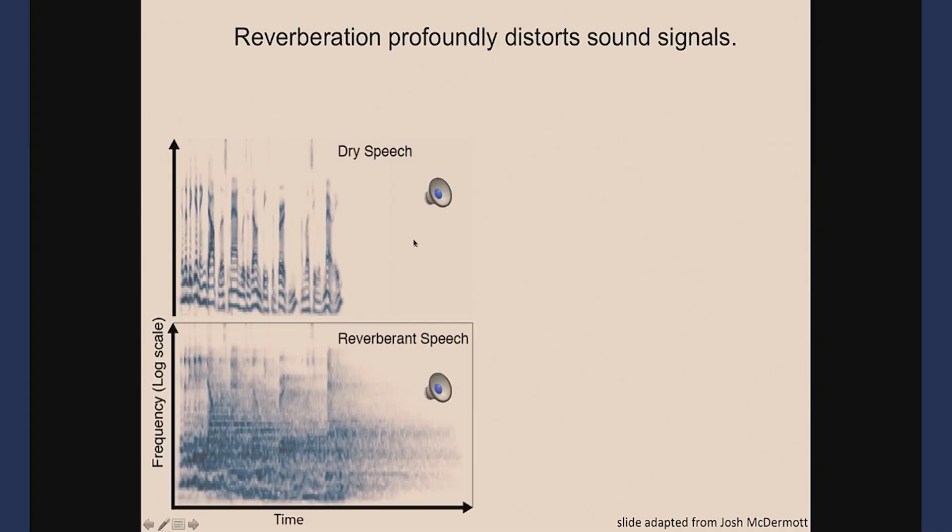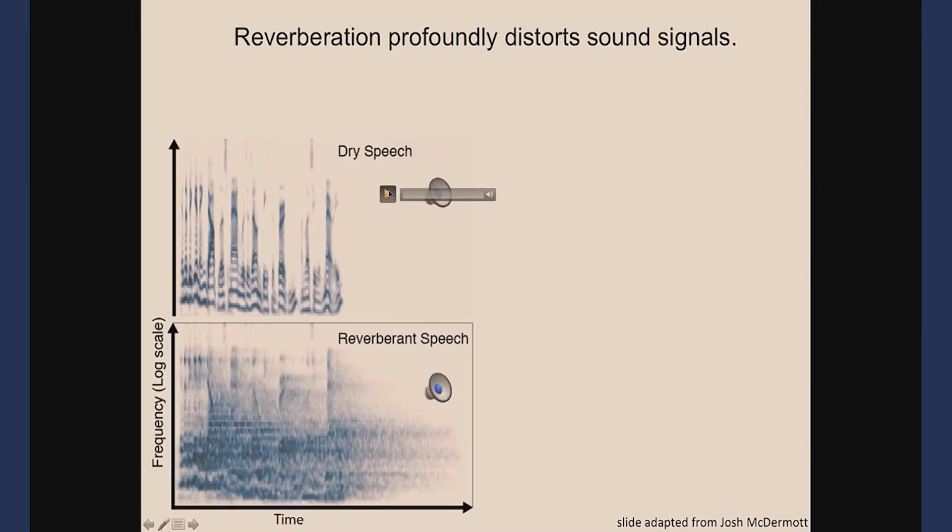Here's dry speech with no reverb — 'they ate the lemon pie, father forgot the bread.' And the same speech with lots of reverb. You can still hear it because your auditory system knows how to solve this problem. On the spectrogram, dry speech shows nice vertical structures; reverb produces a blurry mess. Nonetheless you can hear it fine, and furthermore the reverb also tells us something about the location we're in if we know how to extract it.